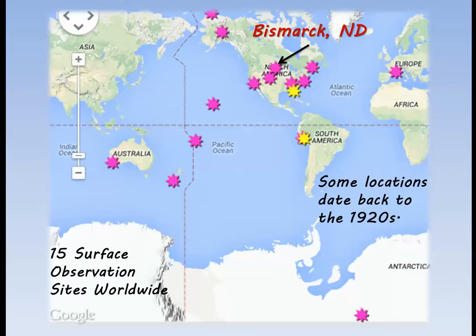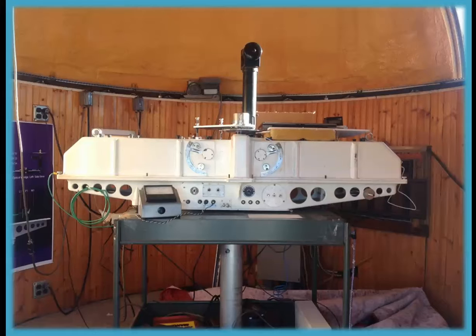The machines taking measurements at these locations rarely, if ever, get changed out, so there's little to no bias in the data. This is the machine we measure ozone with — the Dobson Ozone Spectrophotometer, or DOBSON for short.